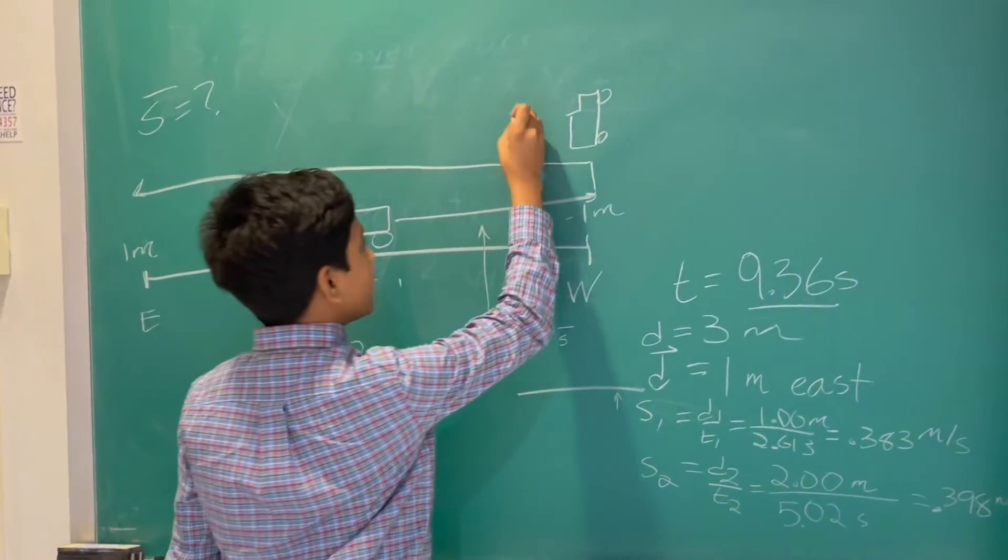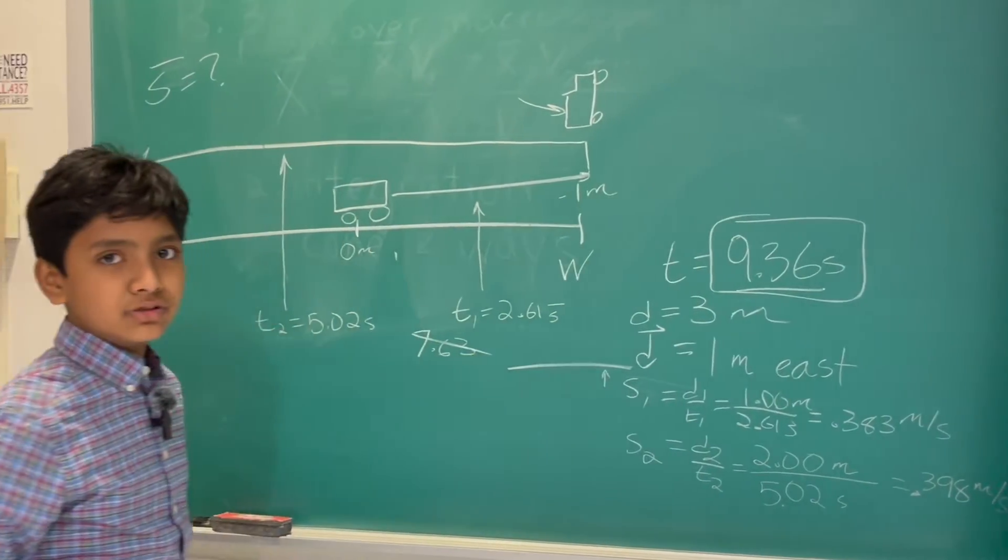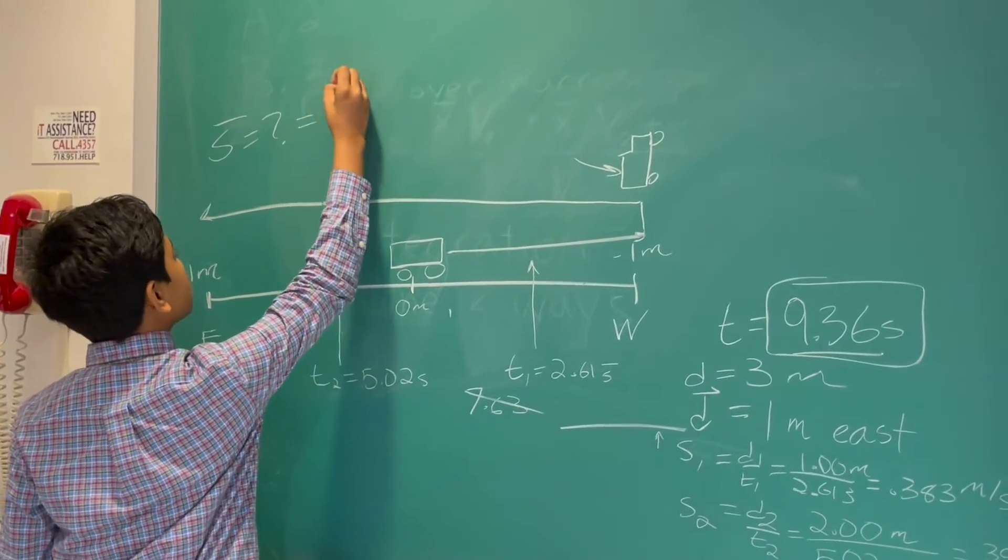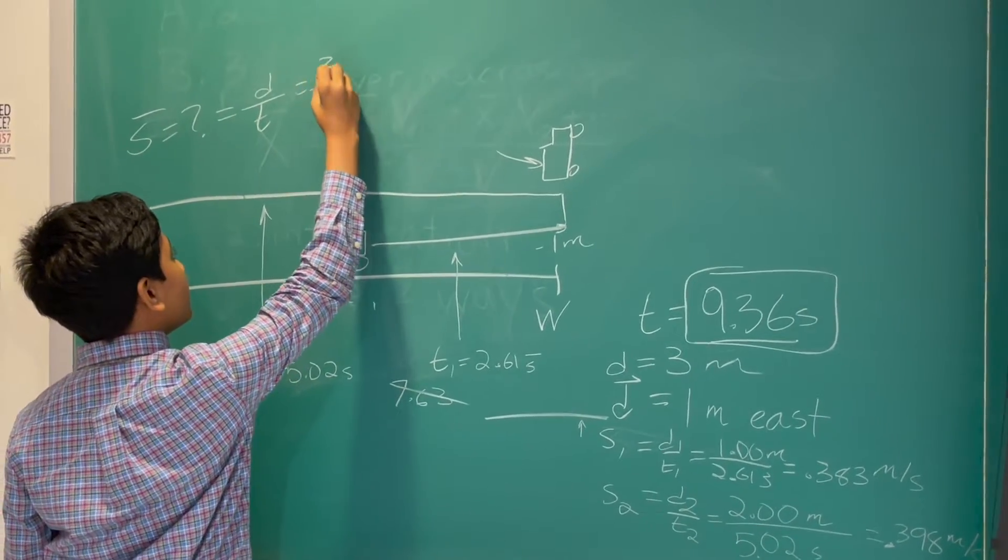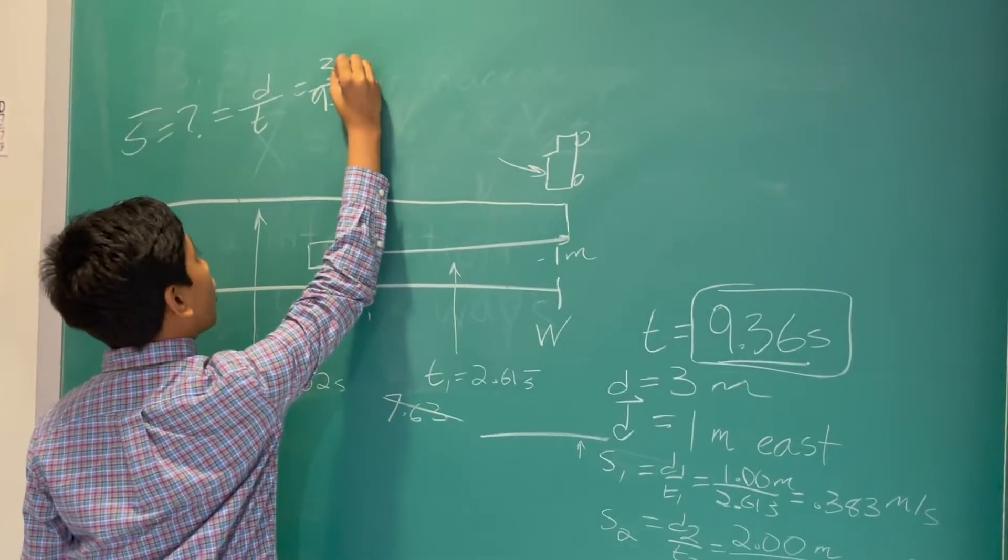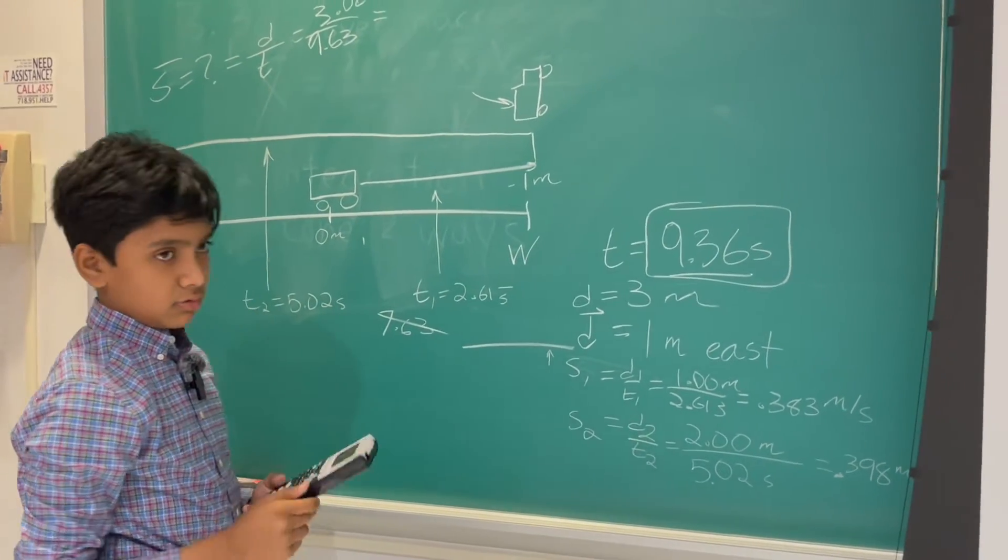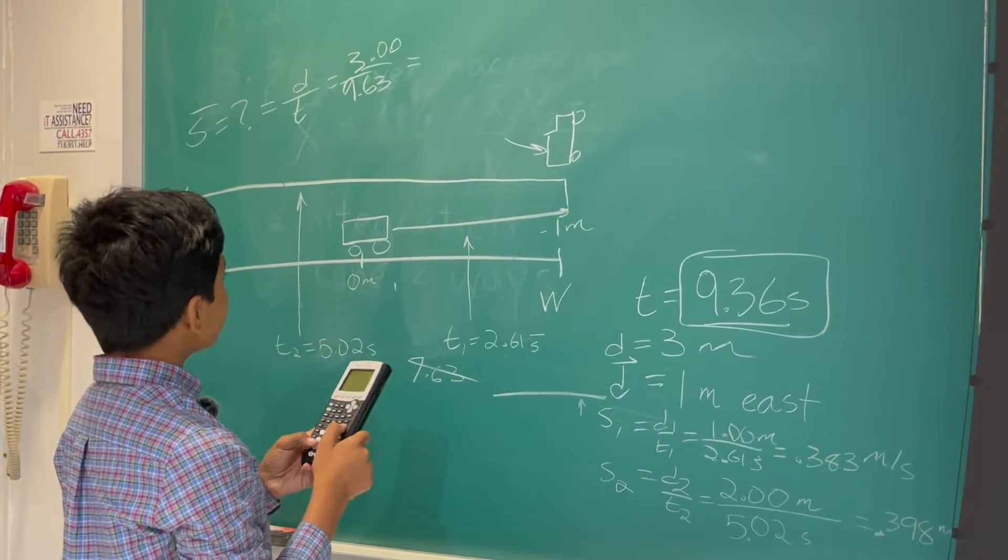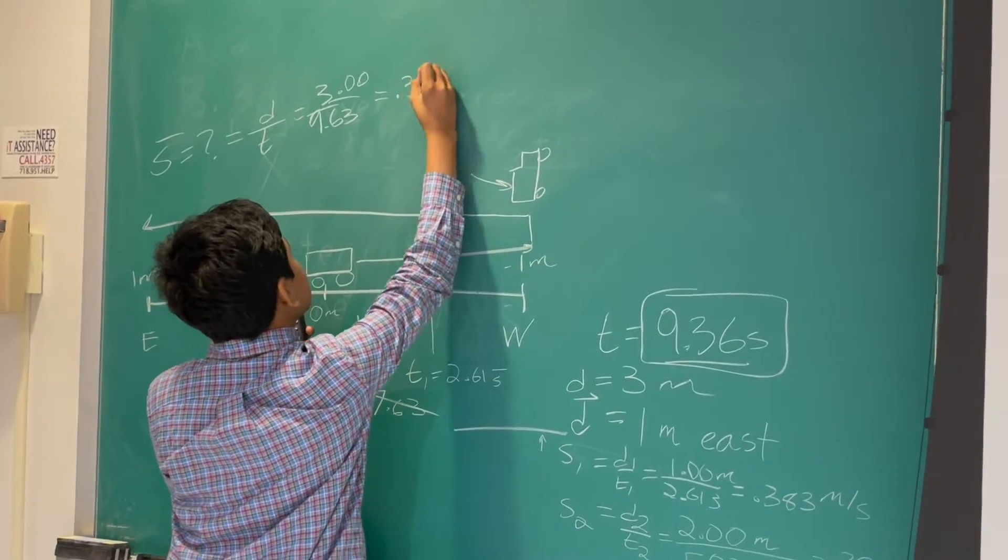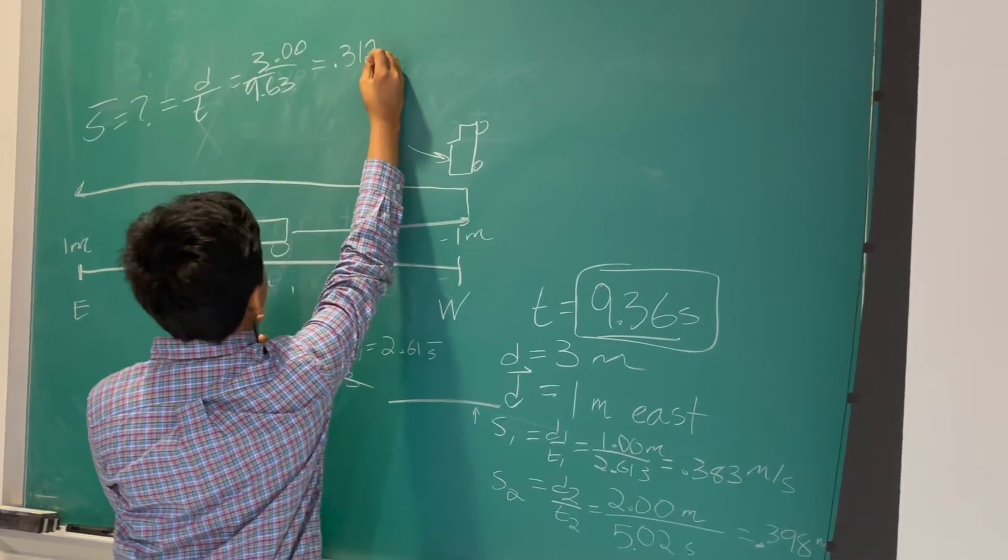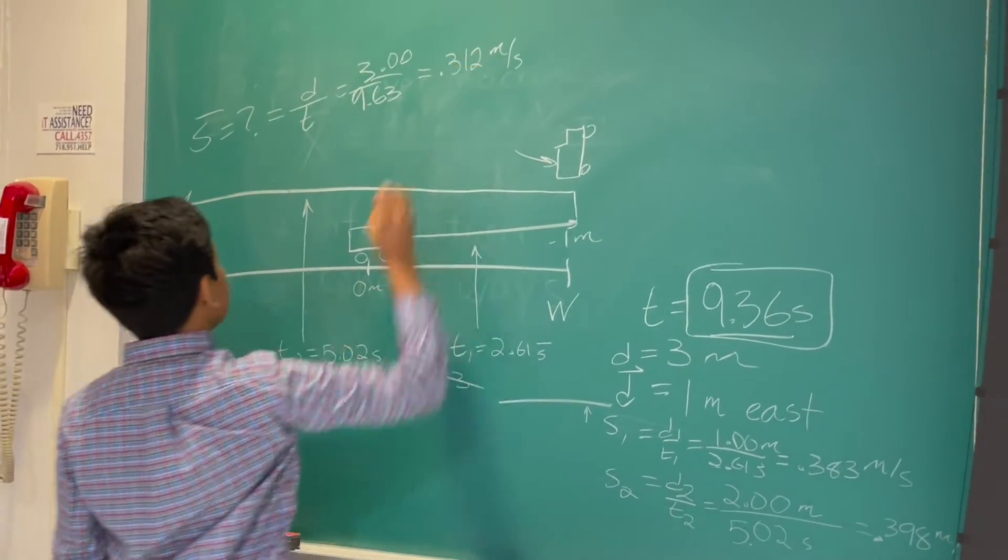But now, that's speed 1 and speed 2. To take in the average speed, you have to take into account the flipping time. So, that means you have to use the full 9.36 seconds instead of 7.63. So, it's equal to the total distance divided by the total time, which is 3 divided by 9.63. Yes, 3.00, because it's simply an addition of things that already have three sig figs. So, even though it's like 0.3115265, we get 0.312 only. So, that is our total average speed.